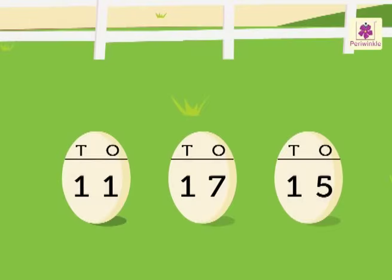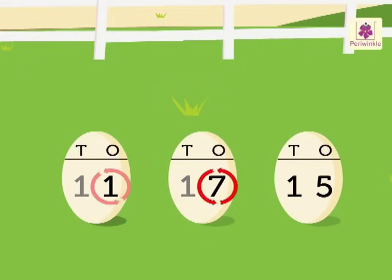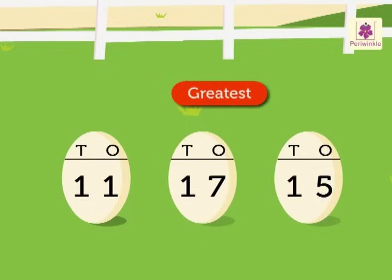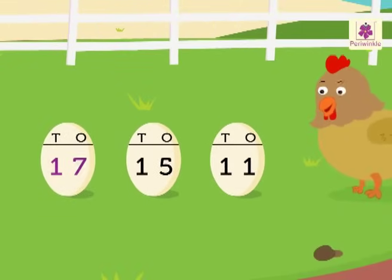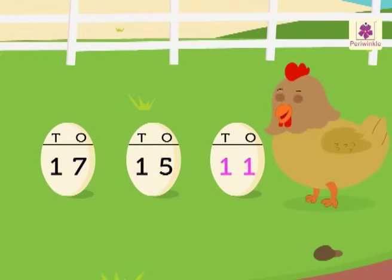Let's compare the ones, as each number has 1 ten. Here there is one one in 11, seven ones in 17, and five ones in 15. So the greatest is seven ones in 17 and the smallest is one one in 11. Hence, the descending order is 17, 15, 11.